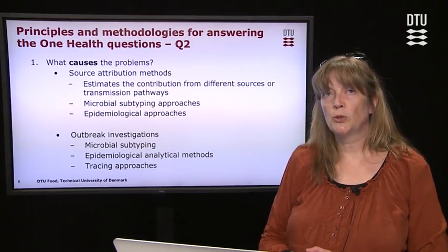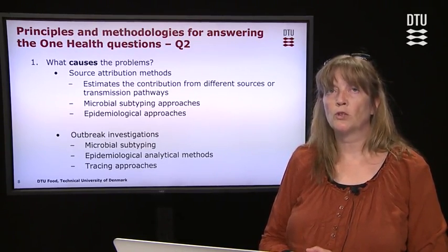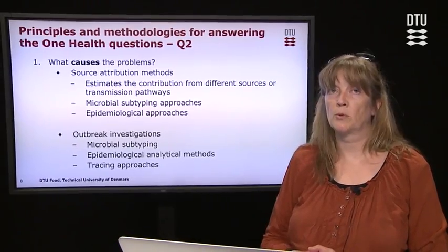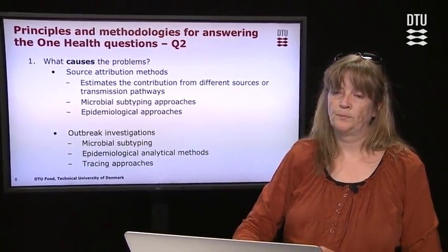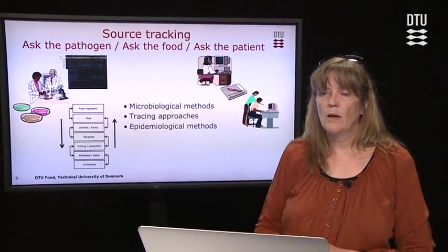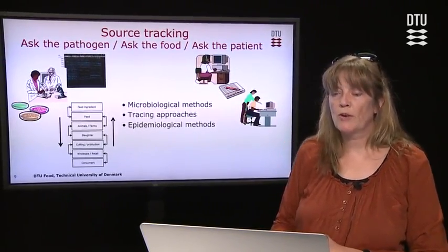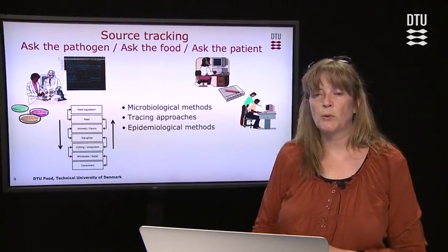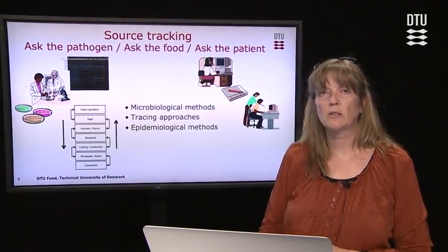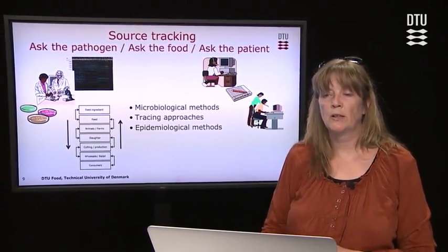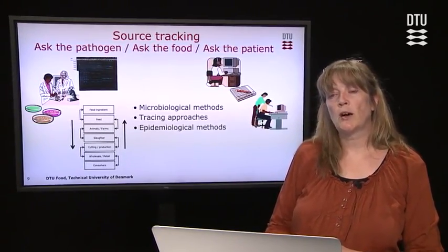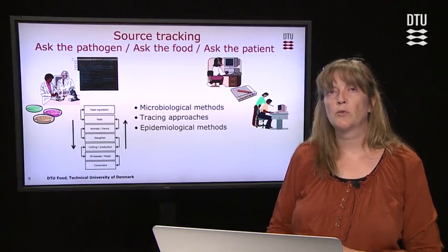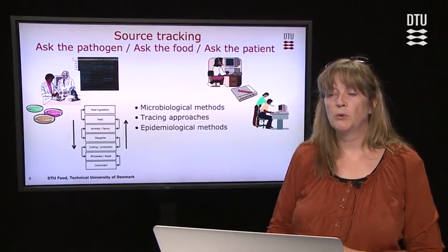For outbreak investigation, we also use a combination of microbial subtyping techniques, epidemiological analytical methods, and tracing approaches. In popular terms, source tracking has three ways of attacking the problem: you can ask the pathogen, you can ask the food, or you can ask the patient. You will typically use microbiological methods to ask the pathogen, the tracing approach to ask the food, and epidemiological methods to ask the patients.